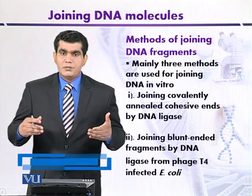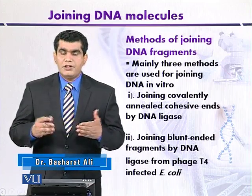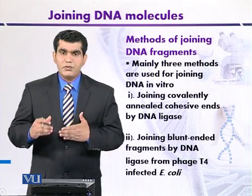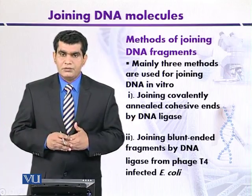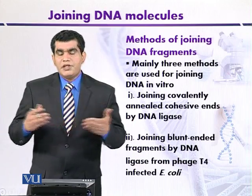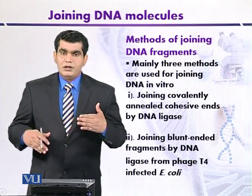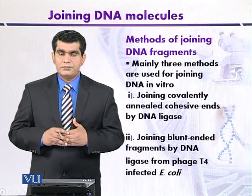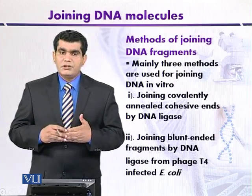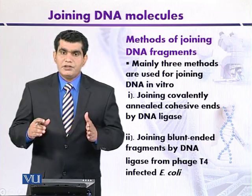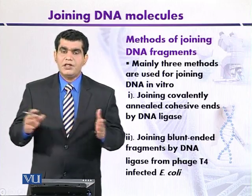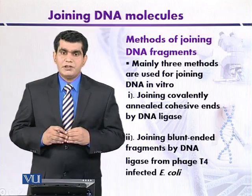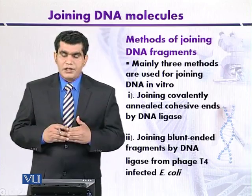Another method also depends on DNA ligase, but the source is different. This DNA ligase is encoded by Phage T4, which can infect E. coli. T4 DNA ligase joins or ligates DNA fragments that have blunt ends. For instance, if the target DNA is digested with a restriction enzyme that produces blunt ends, ligation of those blunt ends is mediated by T4 DNA ligase.